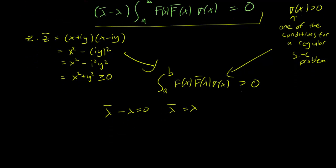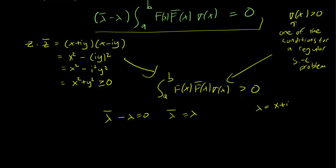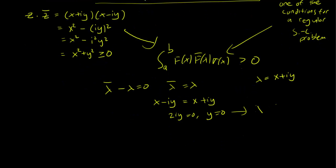So if you write down lambda equals x plus iy, this implies that x minus iy equals x plus iy, or 2iy equals 0, so y equals 0. And this implies that lambda equals x, which means that lambda is just a real number. And we are done. Eigenvalues have to be real.